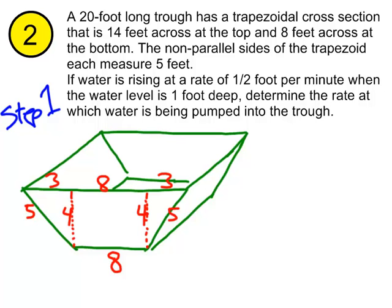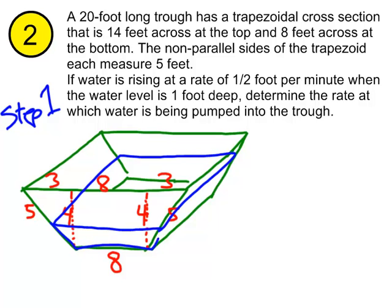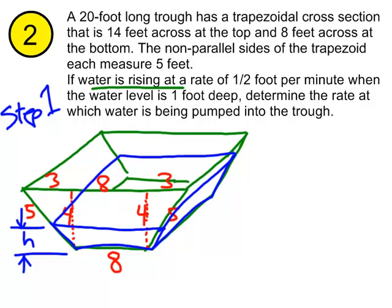I'll draw some water in there — some arbitrary height. Here's the water filling up the bottom of the trough. Let's call that height h. Some of this given information is labeled on the sketch. But I do need to document that the water is rising at one-half foot per minute. Unlike the last exercise where we were given a volume rate, here we're given that the height is changing. So dh/dt equals one-half foot per minute.